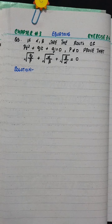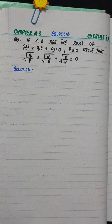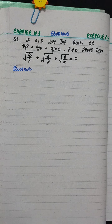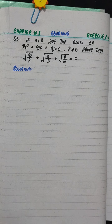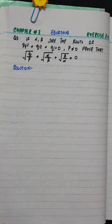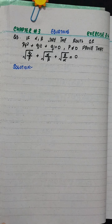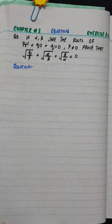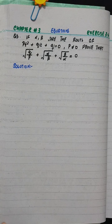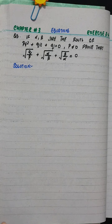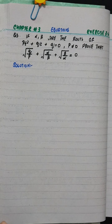Hello everyone, this is Rabia Aslam. In this video, we will solve question number 3 from exercise 3.6, chapter number 3. If alpha and beta are the roots of pt² + qt + q = 0, where p is not equal to zero, prove that √(q/p) + √(α/β) + √(β/α) = 0.